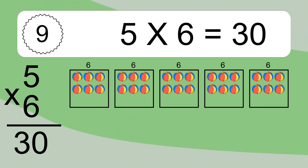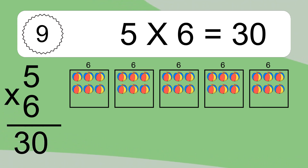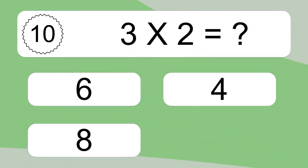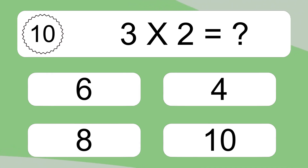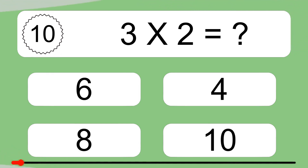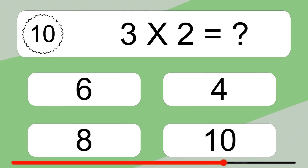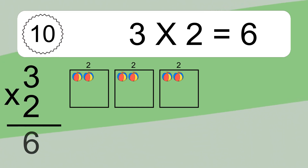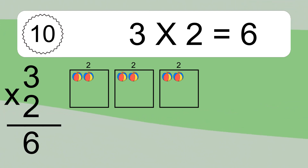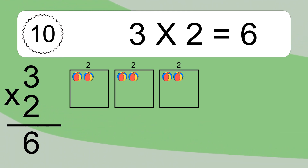5 times 6 equals what? 5 times 6 equals 30. We have 3 boxes, and each box has 2 colorful balls inside. If you count all the balls in all the boxes together, you will have 3 times 2 balls. This equals 6 balls.